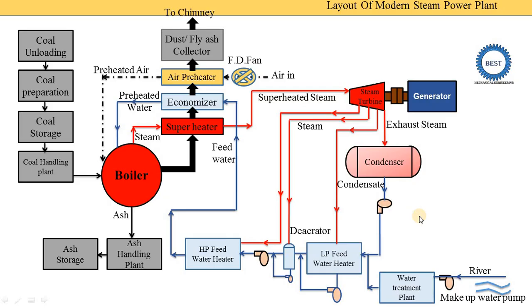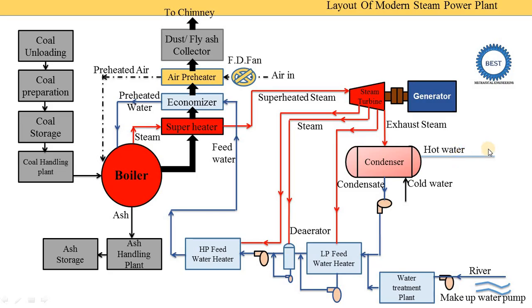The fourth circuit is the cooling water circuit. In the condenser, steam is converted into water, and for this we need to supply cooling water. Cold water is supplied to the condenser and absorbs heat energy from the steam, becoming hot water. For the cooling circuit, there are two options: an open system or a closed system. In the open system, water is taken from a river, supplied to the condenser, and the hot water coming out is returned to the river. In areas where water is available in limited quantity, a closed circuit using a cooling tower is used.